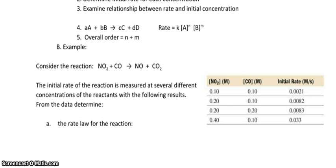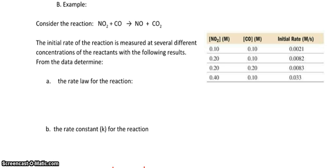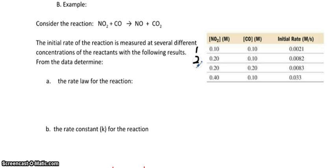Let me scroll up the screen. So for example, we have nitrogen dioxide plus carbon monoxide yielding nitrogen monoxide and carbon dioxide. Notice over here we have our data from the experiment — the initial rate of reaction is measured at several different concentrations with the following results. Go ahead and number each of these as your experiment numbers: experiment one, two, three, and four. Then we have to figure out the rate law.